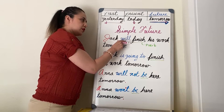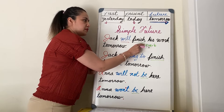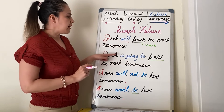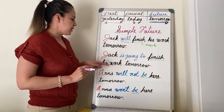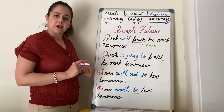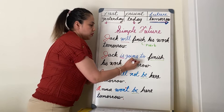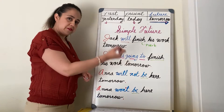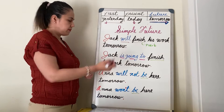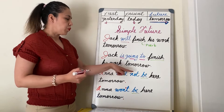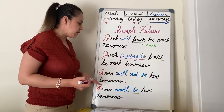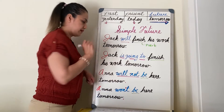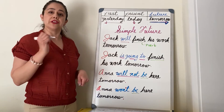Jack is going to finish his work tomorrow. We also use 'going to' in future tense. Anna will not be here tomorrow — negative: will not, and it's placed before the verb.